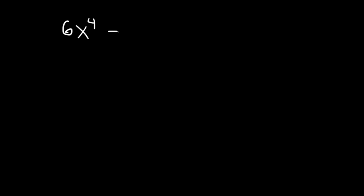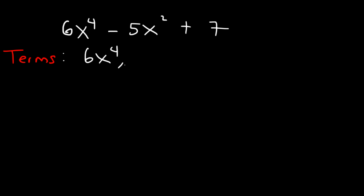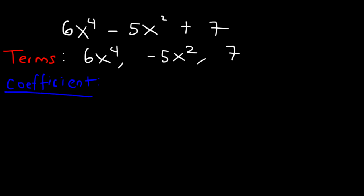In this lesson we're going to talk about how to identify the coefficients of every term and also the degree of the polynomial. Let's say we have 6x to the fourth minus 5x squared plus 7. The terms are: 6x to the fourth, negative 5x squared, and 7. The coefficients are: 6 for the first term, negative 5 for the second term, and 7 for the last one.